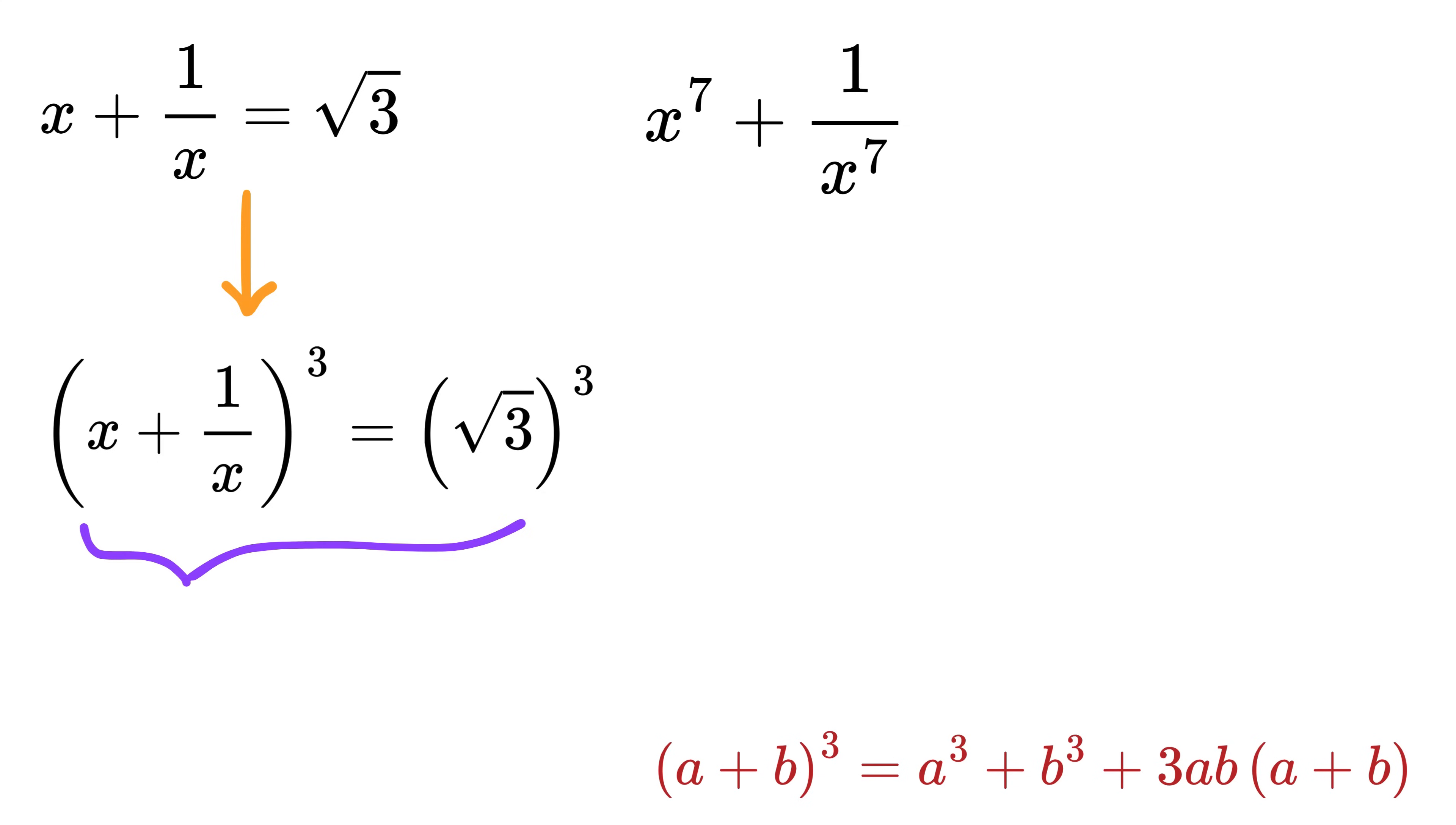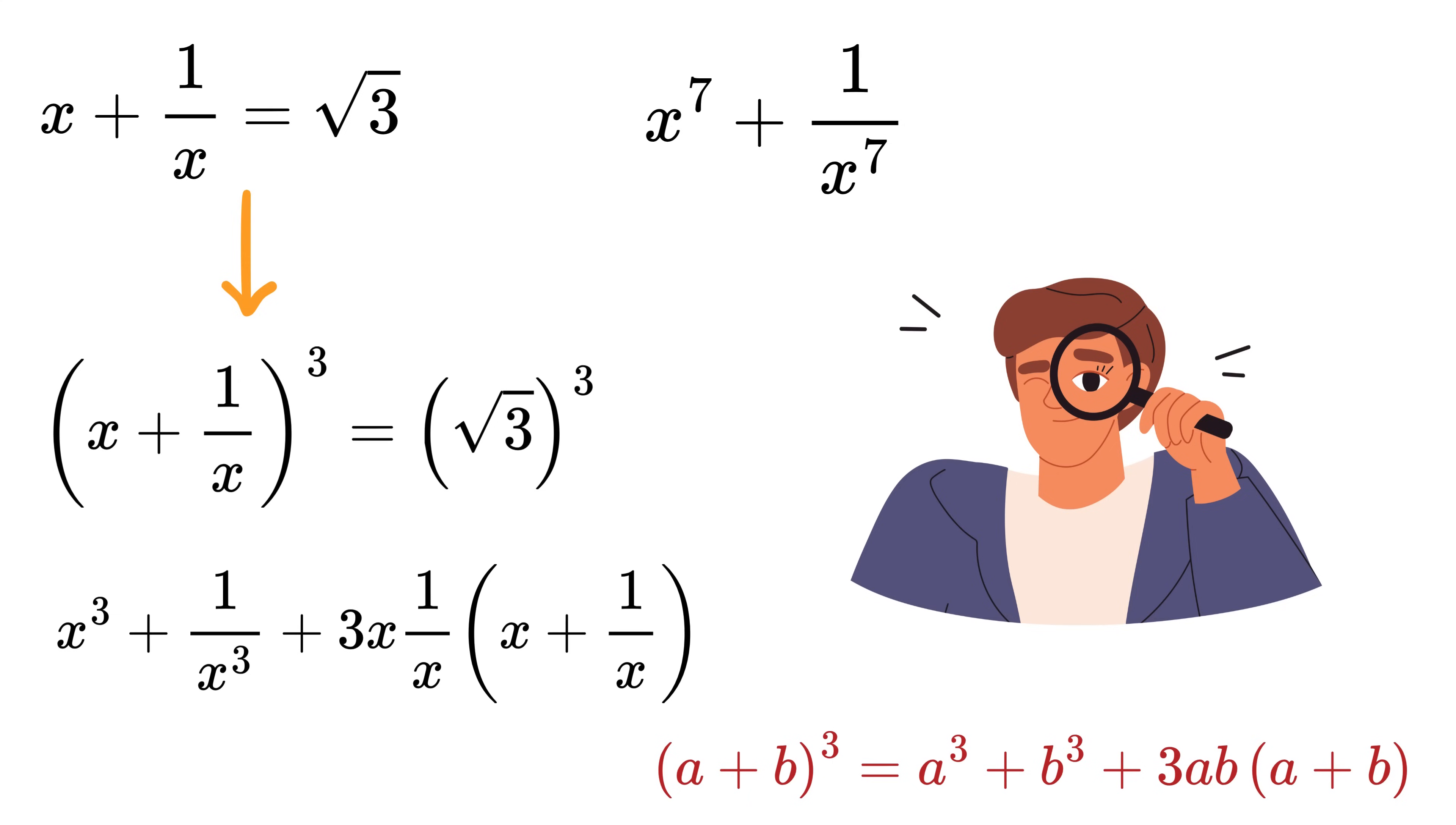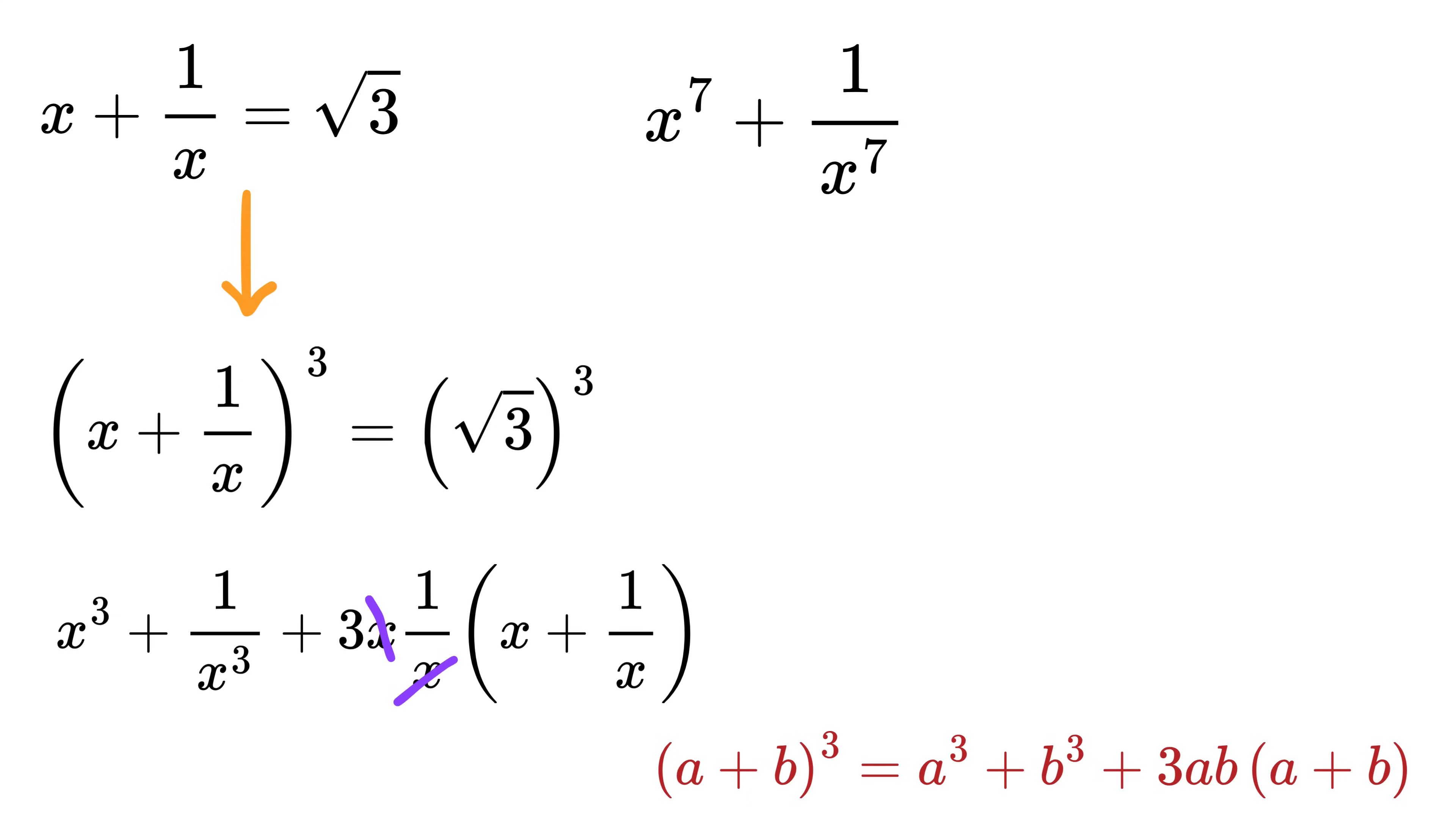So let us expand this step by step. We get x³ + 1/x³ + 3·x·(1/x)·(x + 1/x). Now watch this closely - x and 1/x cancel each other out, and we are just left with 3(x + 1/x). But x + 1/x is √3.